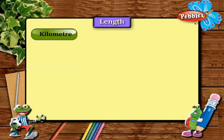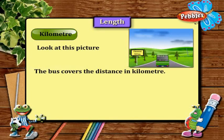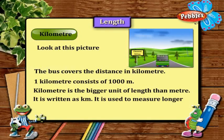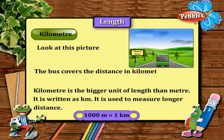Kilometer. Look at this picture — the bus covers distance in kilometers. 1 kilometer consists of 1,000 meters. Kilometer is a bigger unit of length than meter. It is written as km and is used to measure longer distances. Remember, 1,000 meters is equal to 1 kilometer.